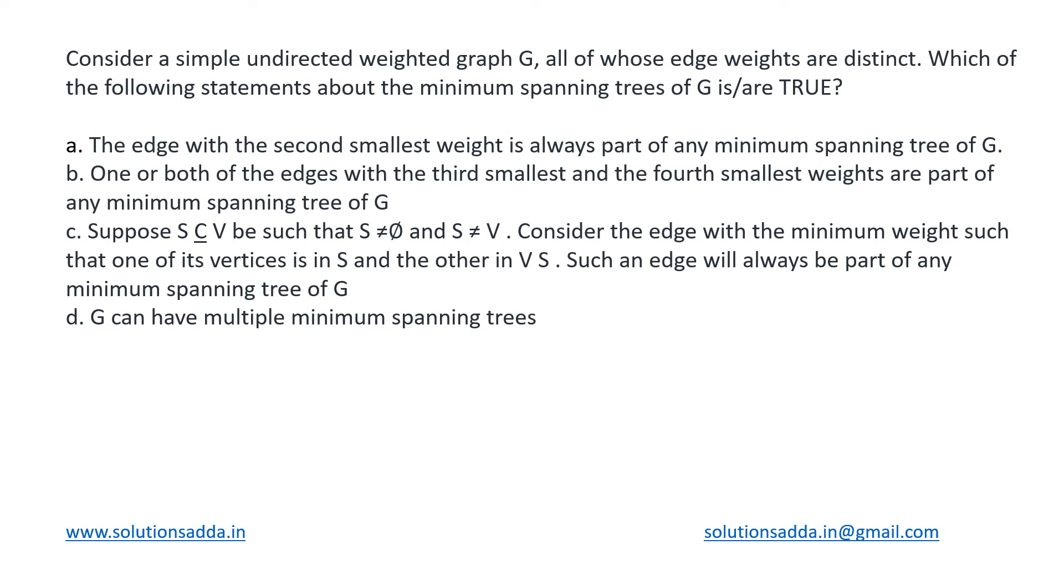This is a graph theory question. We have been given a simple undirected weighted graph G which is having all of its edge weights as distinct. We need to identify which of the given statements hold true about its minimum spanning trees. Now we know that there are some properties of an MST.